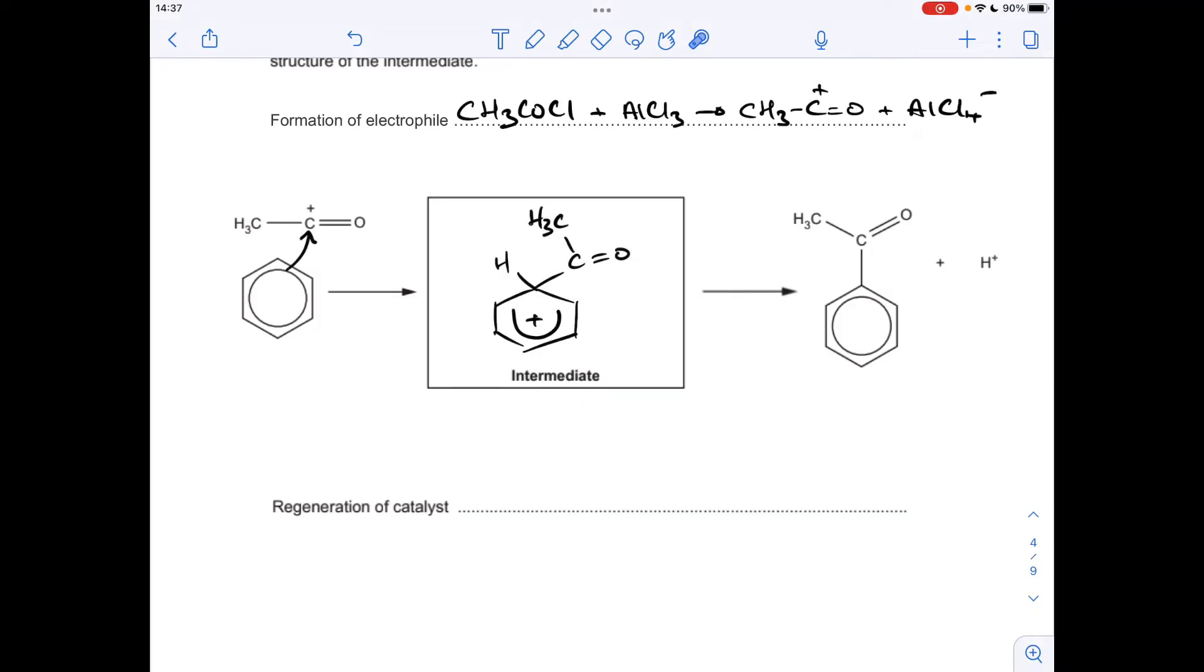And the upshot of that is to generate this intermediate. So I'm kind of using the final structure in the intermediate structure. We show the H. Remember, it's already there, but we show it in the intermediate because it gets involved in the next part.